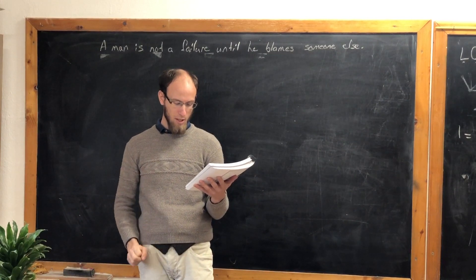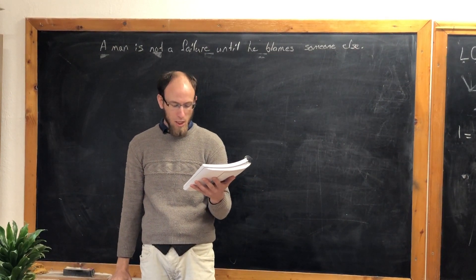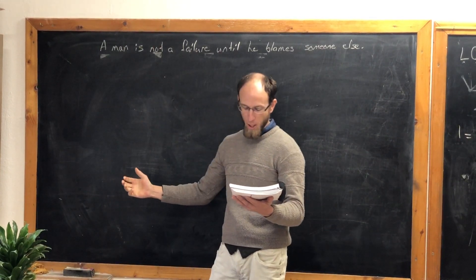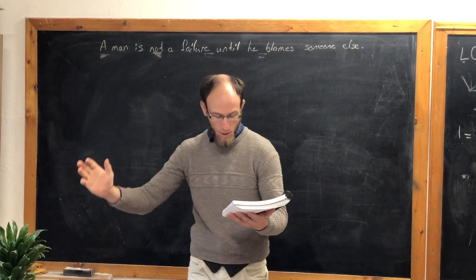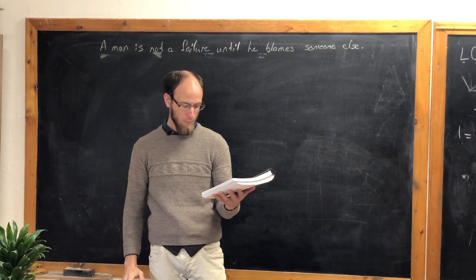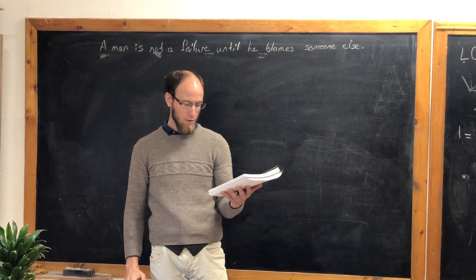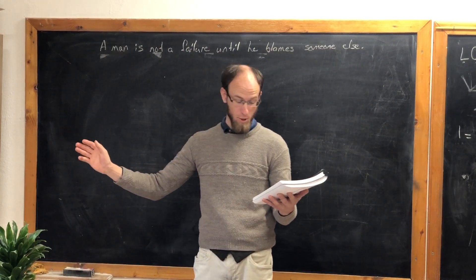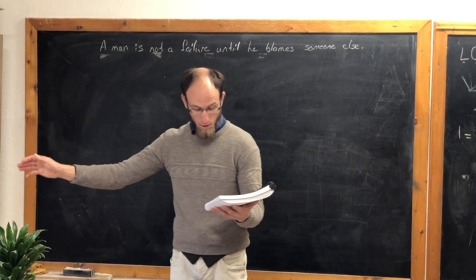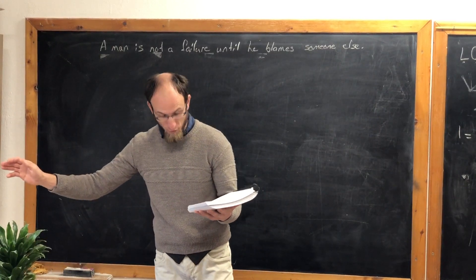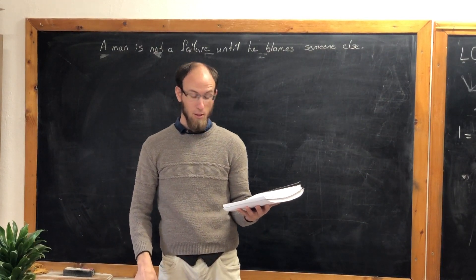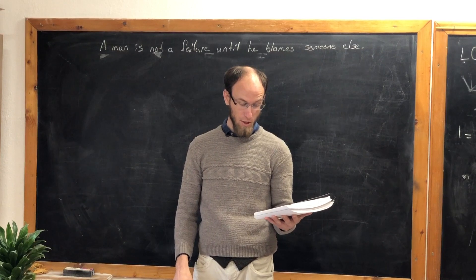The sneer is gone from Casey's lip. His teeth are clenched in hate. He pounds with cruel violence his bat upon the plate. And now the pitcher holds the ball. And now he lets it go. And now the air is shattered by the force of Casey's blow. Oh, somewhere in that favored land the sun is shining bright. The band is playing somewhere, and somewhere hearts are light. And somewhere men are laughing, and somewhere children shout. But there is no joy in Mudville. Mighty Casey has struck out.